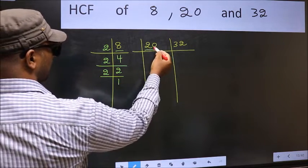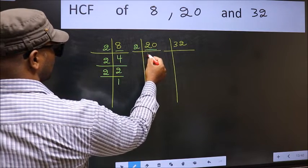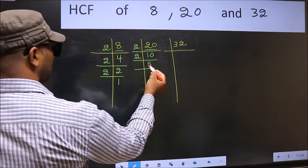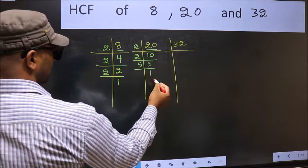Now the other number 20. 20 is 2 times 10. Now 10 is 2 times 5. Now 5 is a prime number, so 5 times 1.